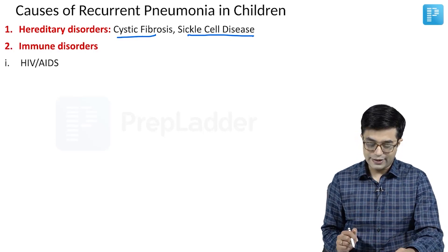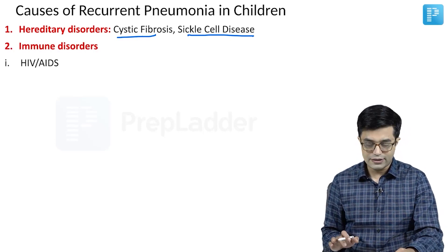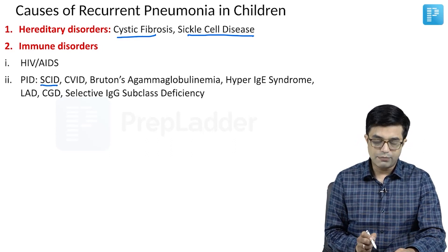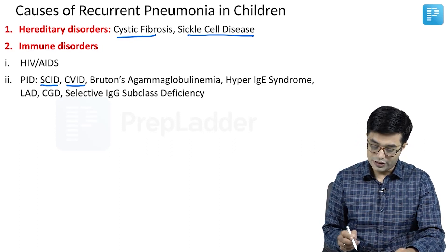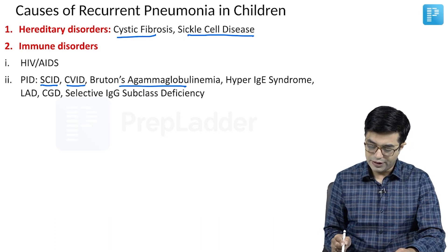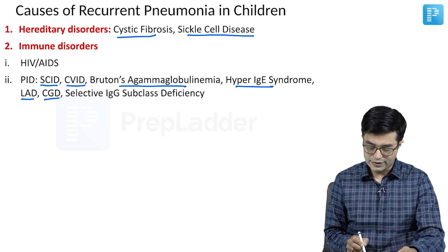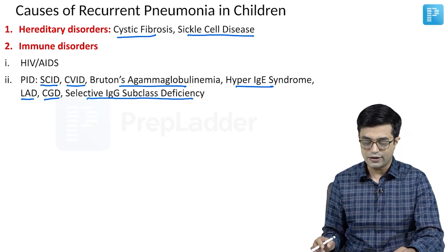Immune disorders — secondary immunodeficiencies like HIV/AIDS, and primary immunodeficiencies like severe combined immunodeficiency (SCID), CVID, Bruton's agammaglobulinemia, hyper IgE syndrome, LAD, chronic granulomatous disease, and selective IgG subclass deficiency — they all can cause recurrent pneumonia in children.